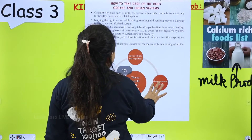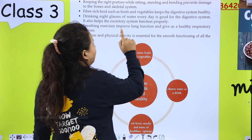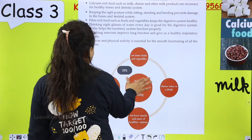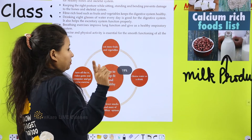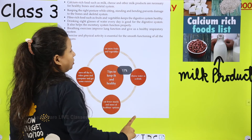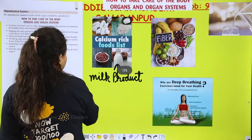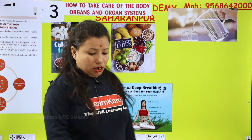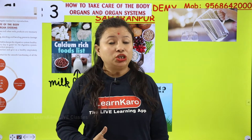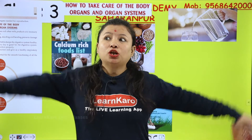Exercise and physical activity is essential for the smooth functioning of all the organs. Remember: exercise and physical activity is essential for the smooth functioning of all the organs. Our body is like a machine — hamari body ek machine ki tarah hai. Hum run karte hain, hum walk karte hain, hum jump karte hain.